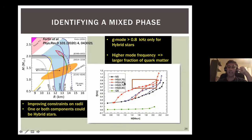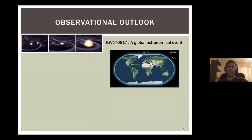If you have a heavy star that shows a g-mode around 0.8 kHz, that can only be a hybrid star — it cannot be a neutron star. You can't have g-modes higher than a certain value for neutron stars: the stiffer you make the equation of state, the lower the g-modes go, and you still need to reach two solar masses. So g-modes always fall in a certain range for neutron stars; if you see something much higher, it must have exotic matter in it.